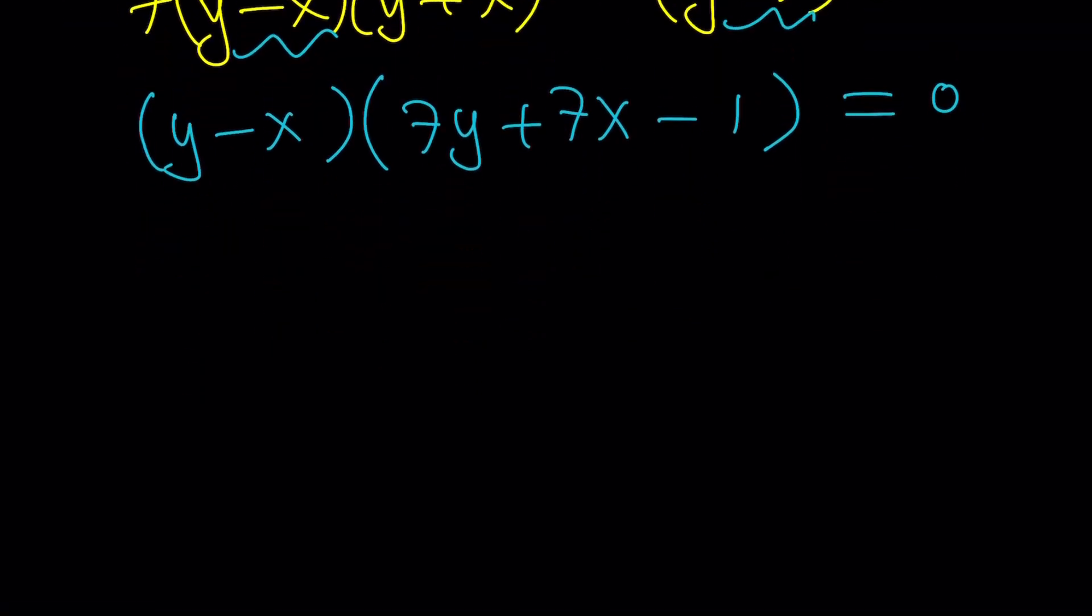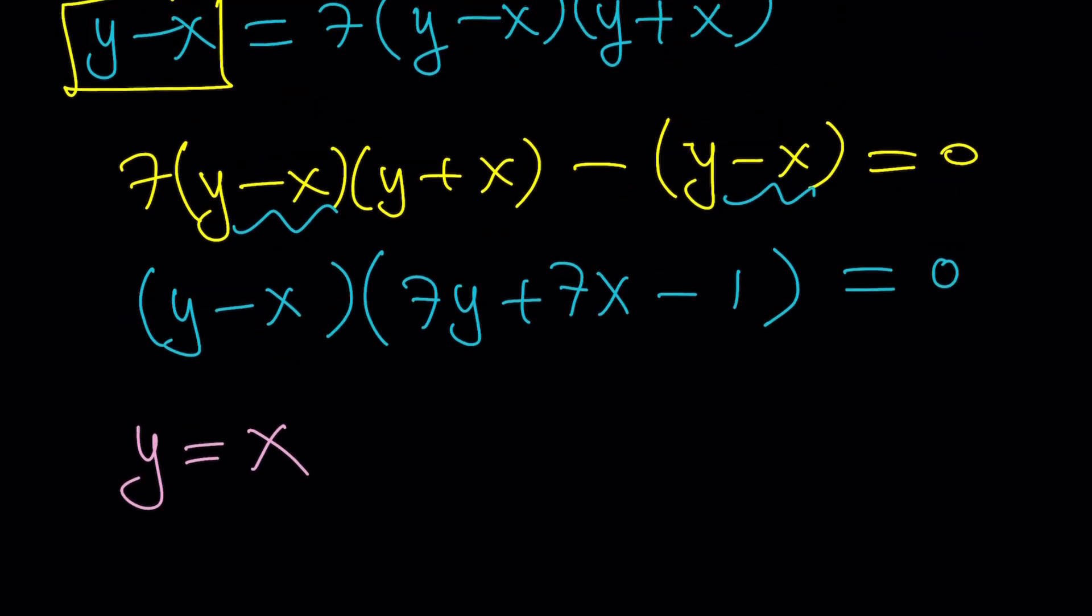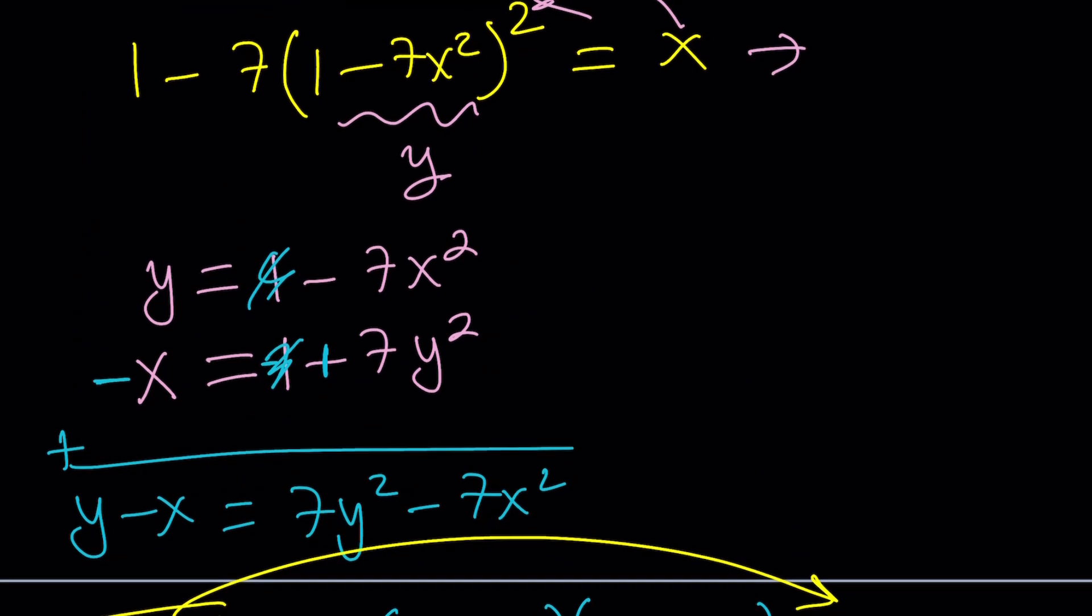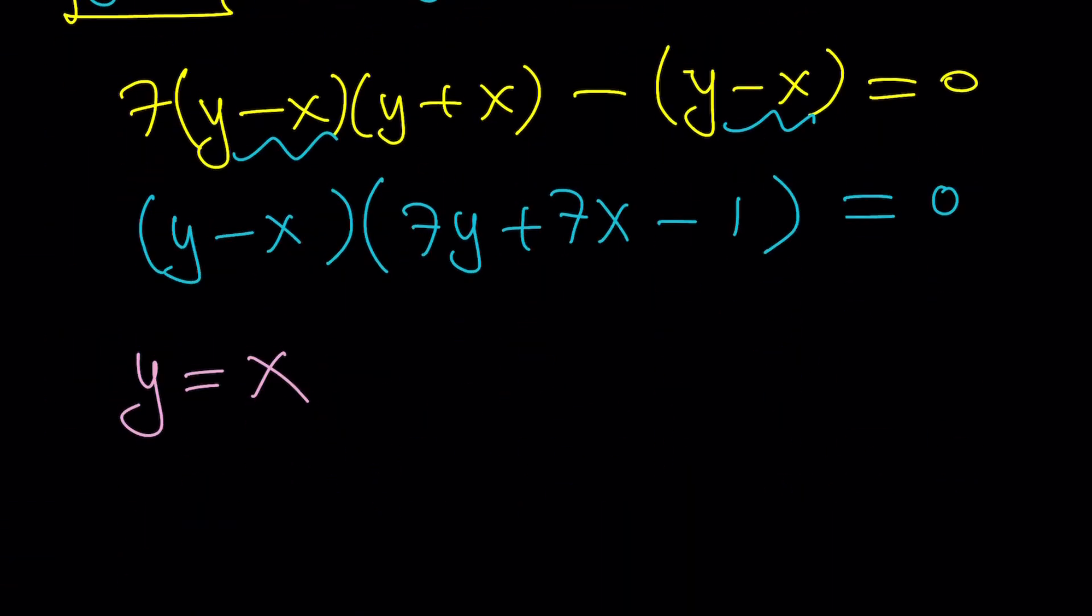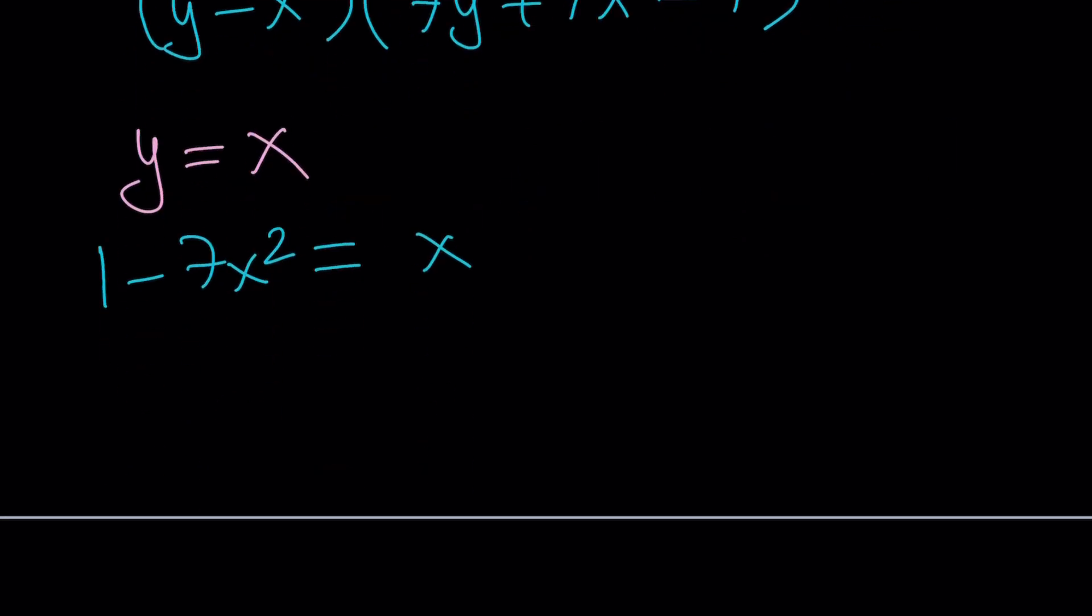The first factor is beautiful because that gives us y equals x. But what is y? Y is a dummy variable. It's temporary. What is y? y is equal to 1 minus 7x squared. Let's back substitute. 1 minus 7x squared is y and that's equal to x. Awesome. This gives us a quadratic equation. You'll see this on the graph. 7x squared plus x minus 1 equals 0.